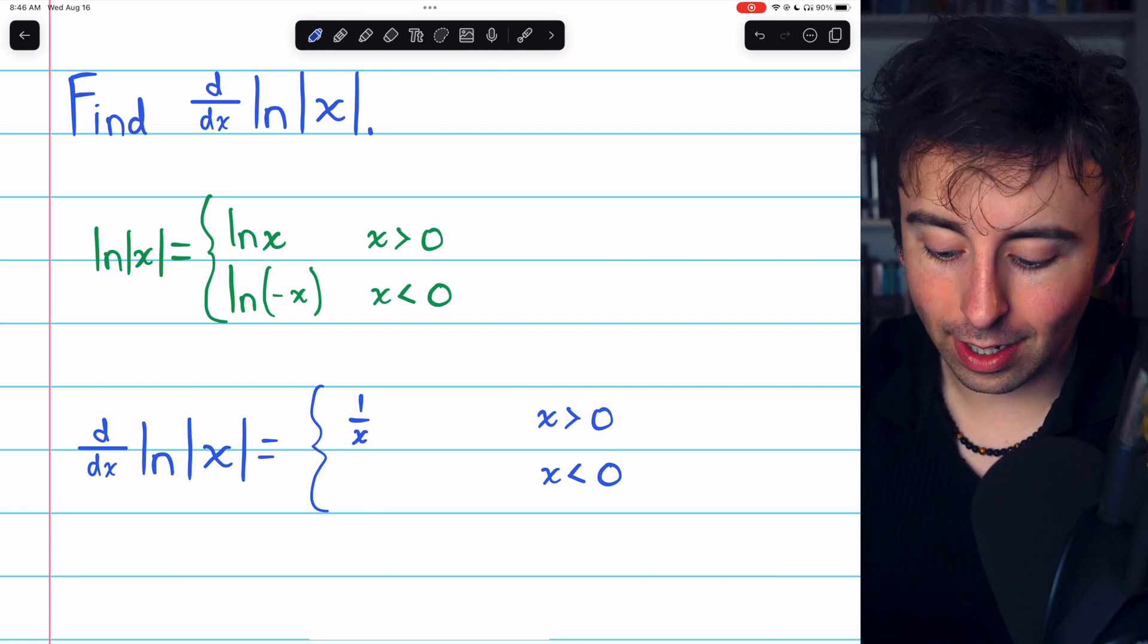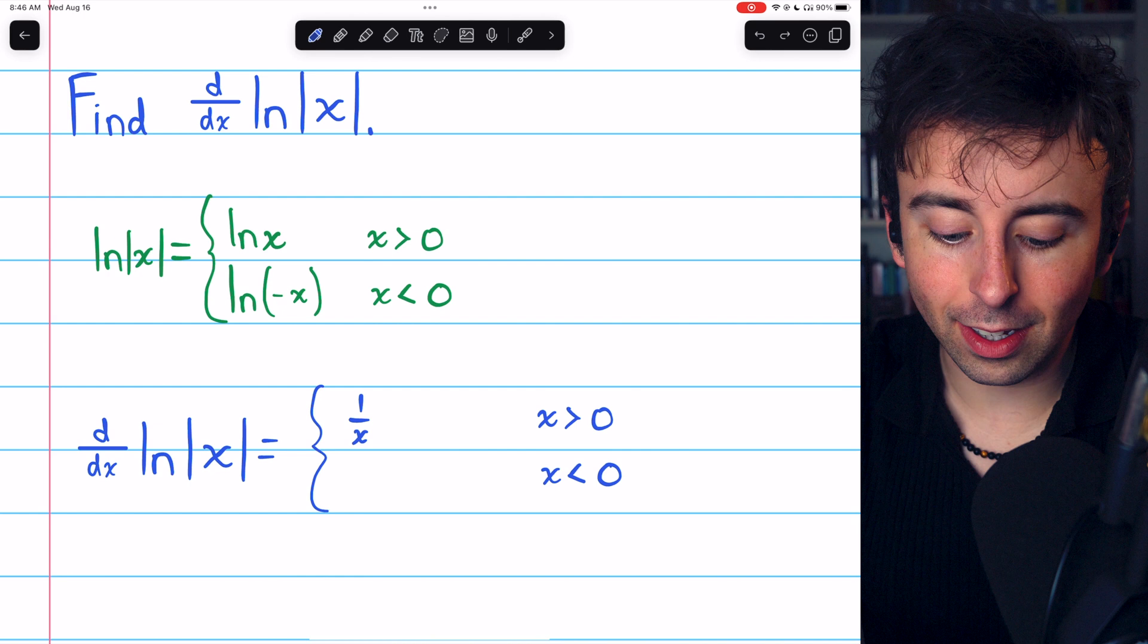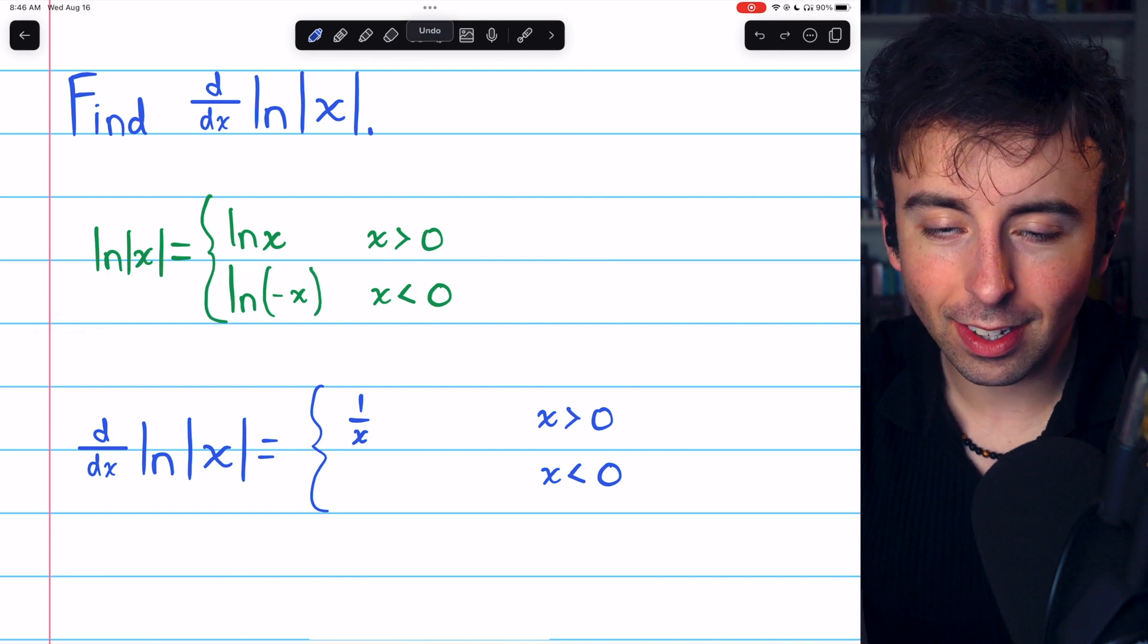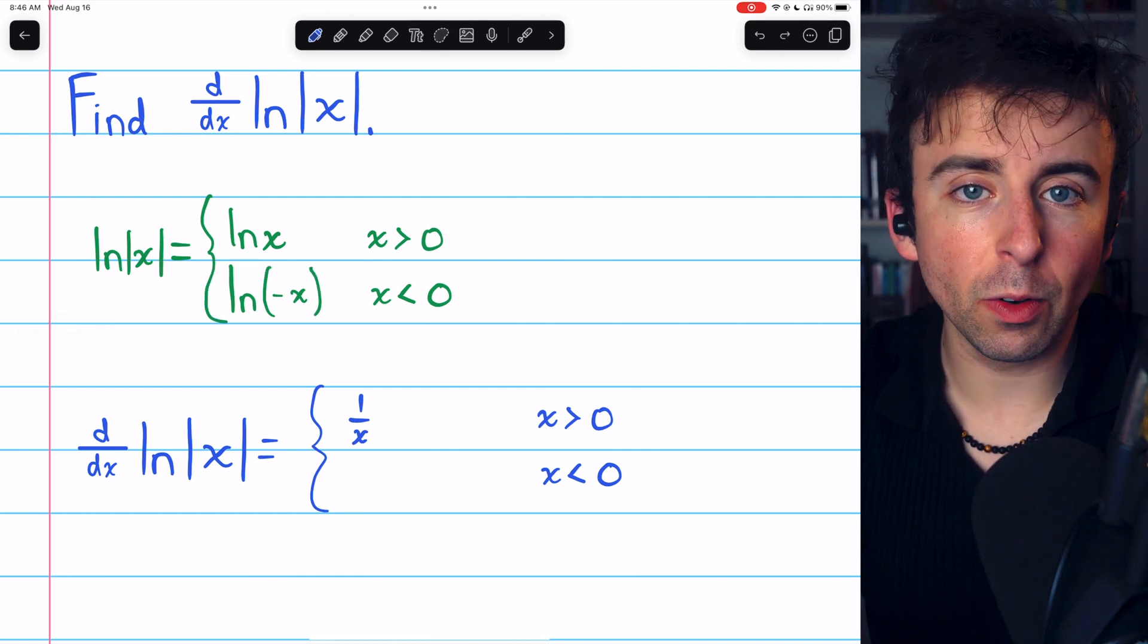On the other hand, if x is negative, the function is natural log of negative x, and so we need to use the chain rule.